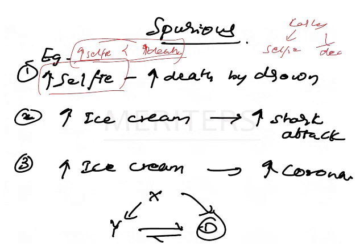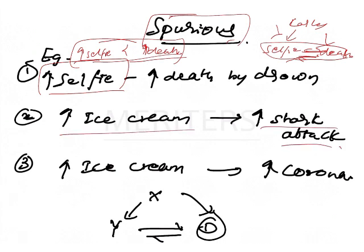But stating that these two are highly related is a spurious kind of relation. Coming to the second: ice cream and shark attack. See how they will state - it's actually a spurious association, no real relation. Like increased ice cream sales leads to increased shark attacks. How is it possible?